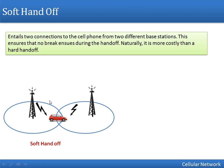So these are the differences between hard handoff and soft handoff. Hard handoff says first break then make, but soft handoff says first make the new connection and once it is established successfully, then break the old connection.